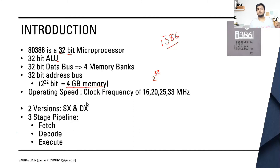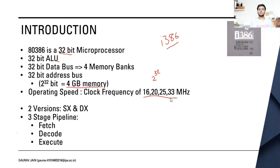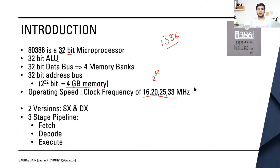The major advancement was in operating speed. The earlier processors were around 10 MHz only. This 32-bit I386 microprocessor had a clock frequency range from 16 to 33 MHz, which was a great advancement. The microprocessors were now faster than ever, and this is the story of the mid-80s, when these advancements were happening.